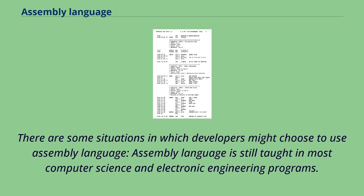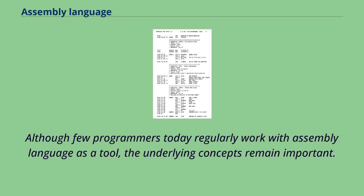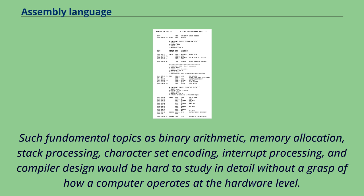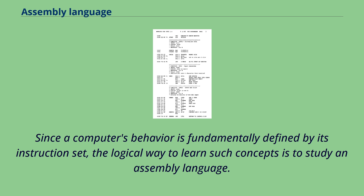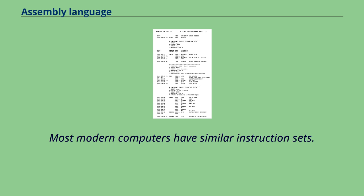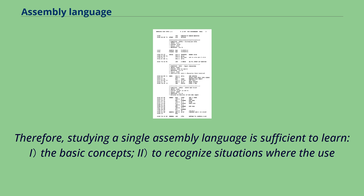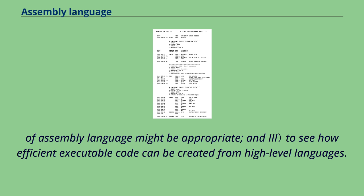There are some situations in which developers might choose to use assembly language. Assembly language is still taught in most computer science and electronic engineering programs. Although few programmers today regularly work with assembly language as a tool, the underlying concepts remain important. Such fundamental topics as binary arithmetic, memory allocation, stack processing, character set encoding, interrupt processing, and compiler design would be hard to study in detail without a grasp of how a computer operates at the hardware level. Since a computer's behavior is fundamentally defined by its instruction set, the logical way to learn such concepts is to study an assembly language. Most modern computers have similar instruction sets; therefore, studying a single assembly language is sufficient to learn the basic concepts, to recognize situations where assembly language might be appropriate, and to see how efficient executable code can be created from high-level languages.